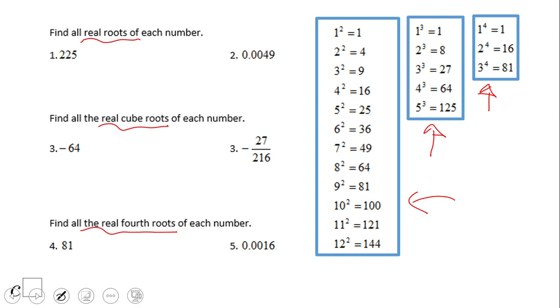Find all real roots of each number. We're looking for a number that raised to the second power is 225. That number is not here in the table but it's not complicated because 15 squared is 225. So basically we're going to have 15, and one of the root is 15. This is called the principal root, but we have another one: negative 15.